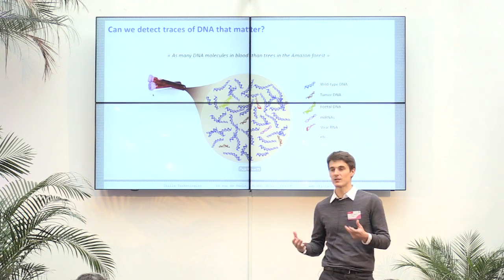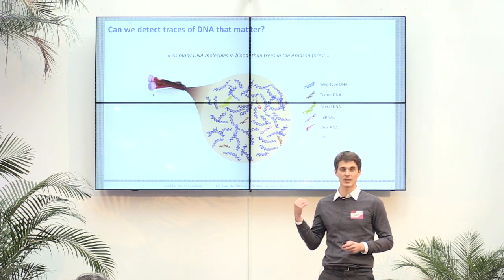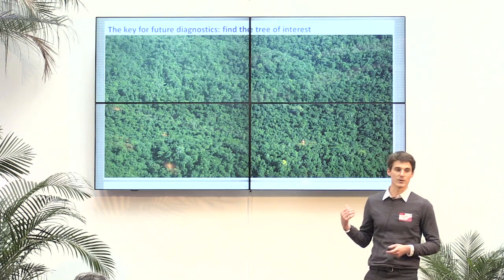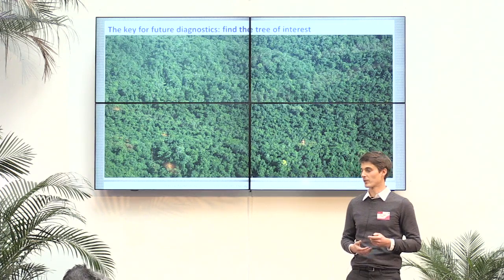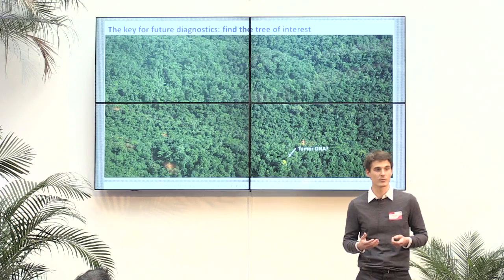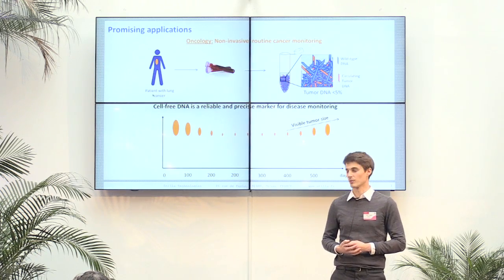But now we know from recent technologies that the real key information is in those traces of DNA that are very hard to catch. The new paradigm is to look at this forest and try to find the tree of interest — one tree in that forest that makes a lot of sense for the patient. For example, that tree could be tumor DNA. If you have tumor DNA in your blood, it means you have a cancer somewhere. I'll explain how we can use this tumor DNA right now to change the way we treat cancer and help people improve their life when they have cancer.